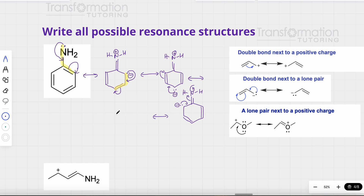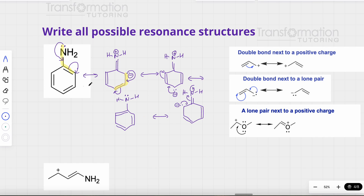This lone pair becomes a double bond to the right, and the electrons from the double bond with the nitrogen give a lone pair back to the nitrogen. Can I keep going? If I try, I realize I am coming back to a structure I have already drawn. That means we have shown all the resonance structures for this molecule.